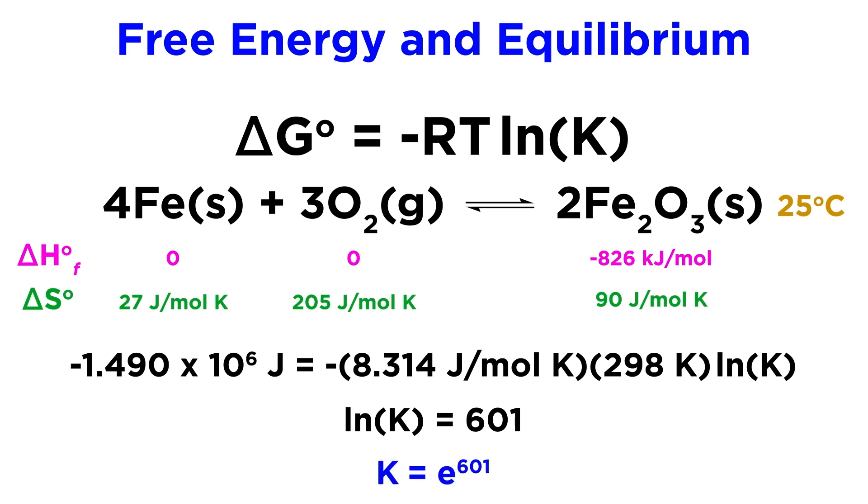Raise E to the power of 601, and we get a number that's so big our calculators probably can't even evaluate it. This means that the forward reaction is extremely spontaneous, meaning that the rusting of iron is profoundly favorable, thermodynamically speaking.